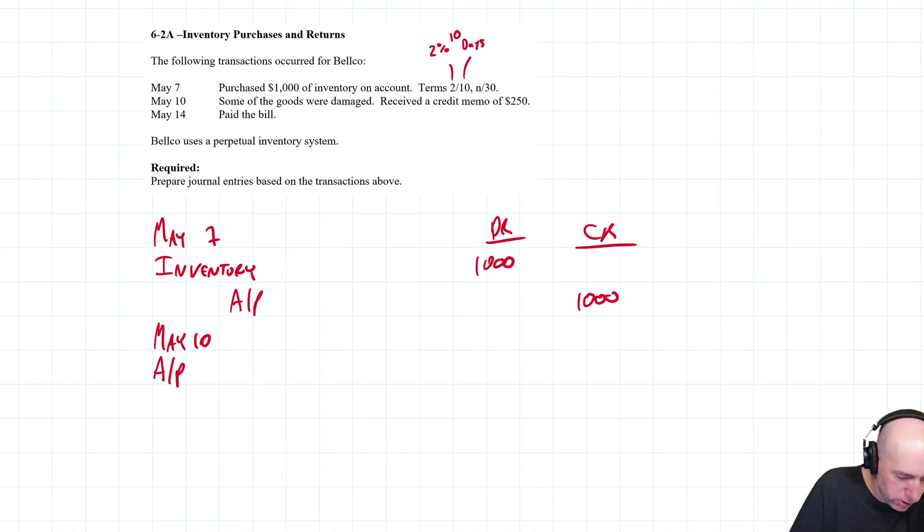Take $250 off the bill, what does that look like? We're going to reduce our AP - debit AP to reduce AP by $250. If the goods were damaged, it means the inventory is less valuable than we thought. We credit inventory by $250. In other words, we bought $1,000 worth of inventory, well no we didn't, we only got $750 because a quarter of the inventory was bad.